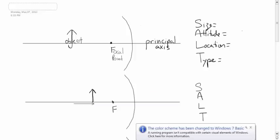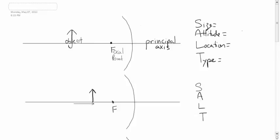Today's science lesson is on drawing ray diagrams. This can get a little bit tricky. When you're drawing a ray diagram, what you're trying to figure out is what type of image the mirror or lens is going to make.